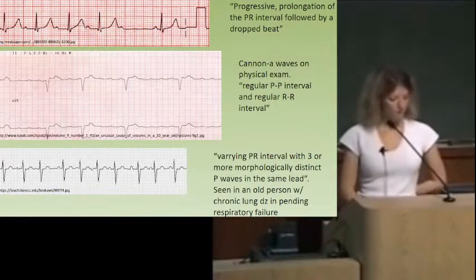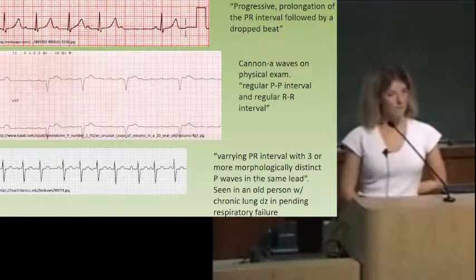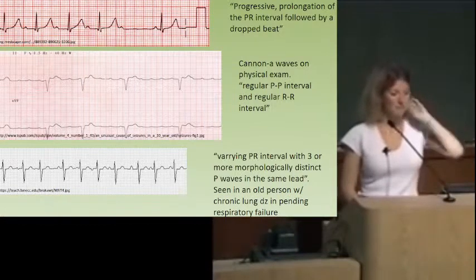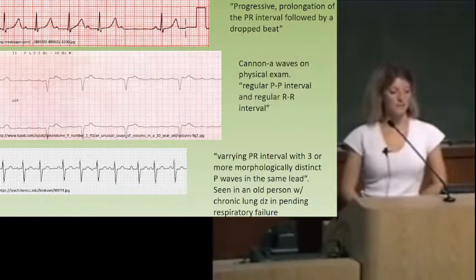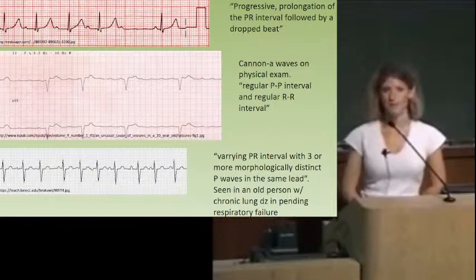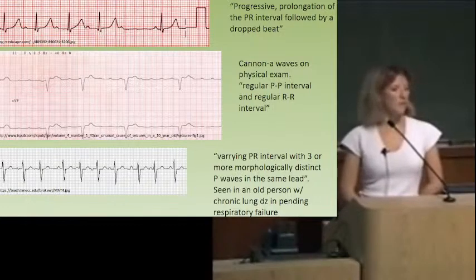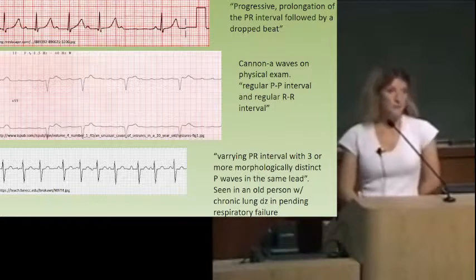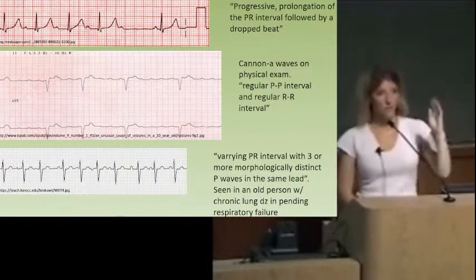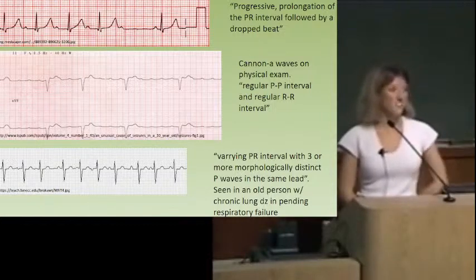The third EKG is MAT — multifocal atrial tachycardia, not AFib. With AFib you typically can't see P waves. For MAT, in the clinical vignette they might describe varying PR intervals with three or more morphologically distinct P waves in the same lead. This is bad news prognostically — it really happens in sick patients with bad pneumonia or terrible respiratory disease. If you can see P waves and find three that are different from each other, think MAT.